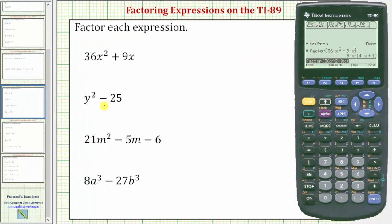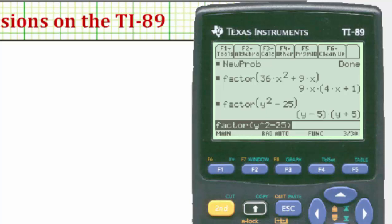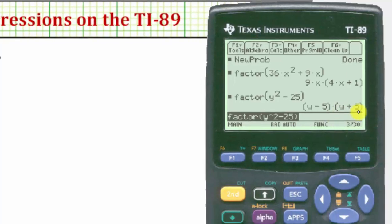To enter the next expression, y squared minus 25, we could edit the previous entry. But let's go ahead and press F2 again and then option two for factor. And enter y raised to the power of two minus 25, close parenthesis, enter. Y squared minus 25 in factored form is the quantity y minus 5 times the quantity y plus 5.